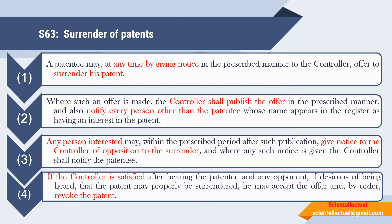Subsection 2: Where such an offer is made, the controller shall publish the offer in the prescribed manner and will notify every person other than the patentee whose name appears in the register as having an interest in the patent. That is, once the patent holder gives an offer to surrender, that offer will be published by the controller, who will also notify every other person whose name is registered in the patent office.